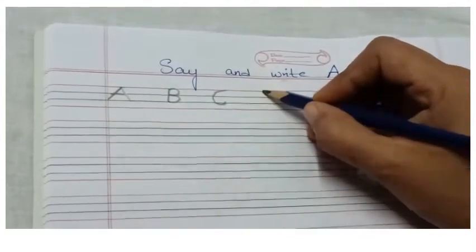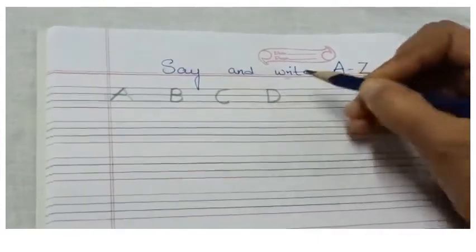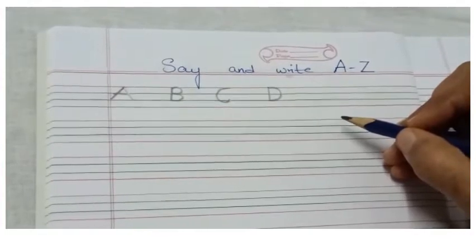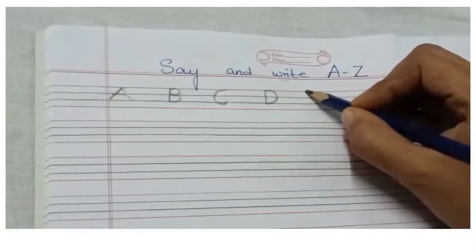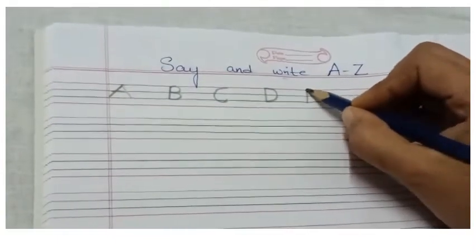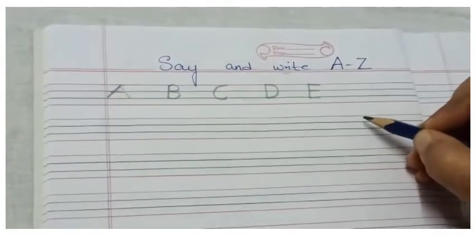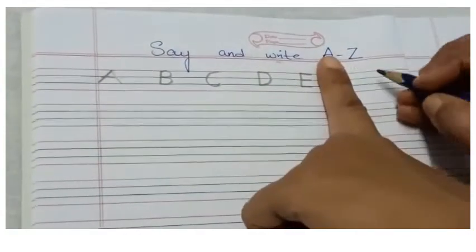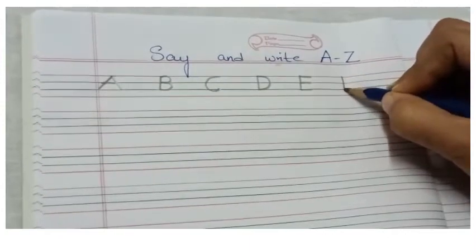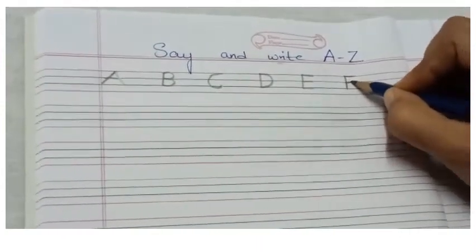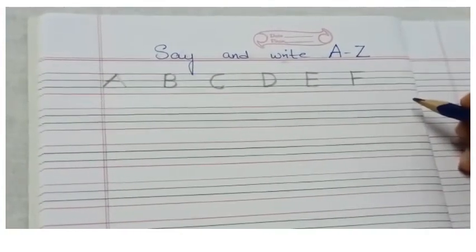Again a finger space, we are going to write capital letter D. Standing line, right curve — capital letter D. Give one finger space and we are going to write capital letter E. Standing line, sleeping line, sleeping line, and a sleeping line — capital letter E. Give one finger space, capital letter F — standing line, sleeping line, sleeping line — capital letter F.